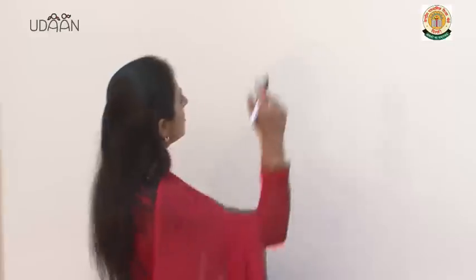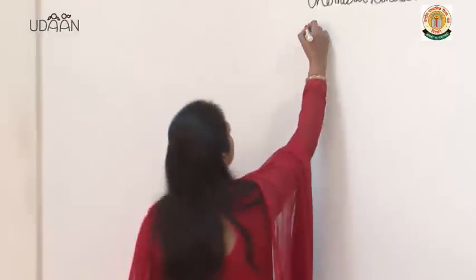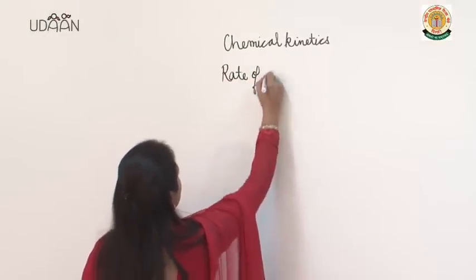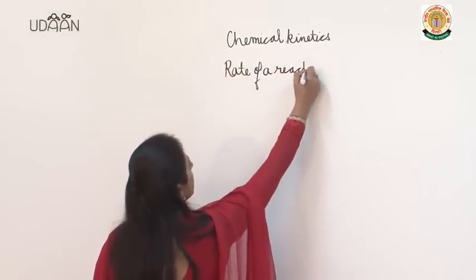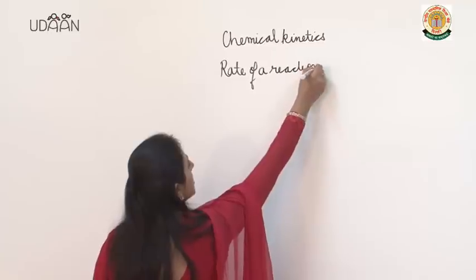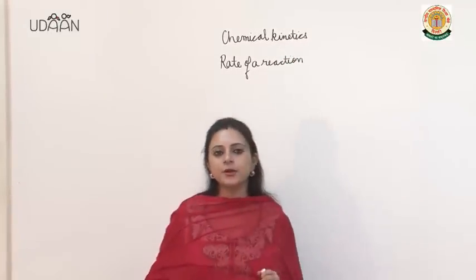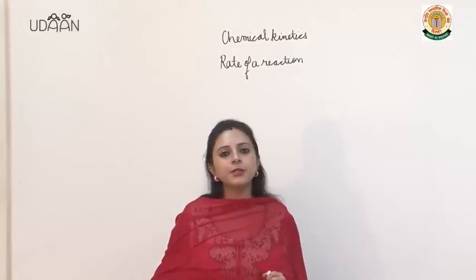Today we will study chemical kinetics. We will study about the rate of reactions and the factors which affect the rate of reaction. Now let us understand what we mean by rate of a reaction. Rate of a reaction means it is the change in concentration of reactants and products per unit time.